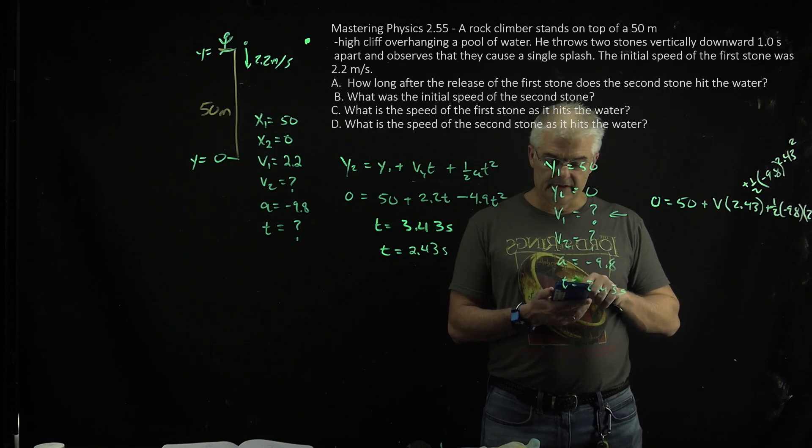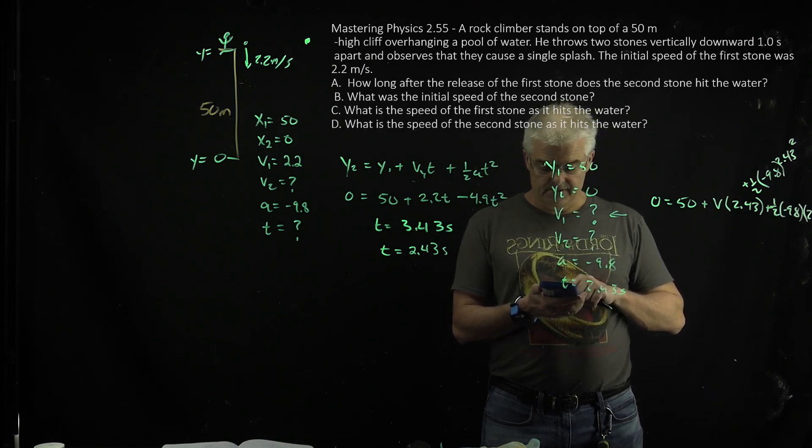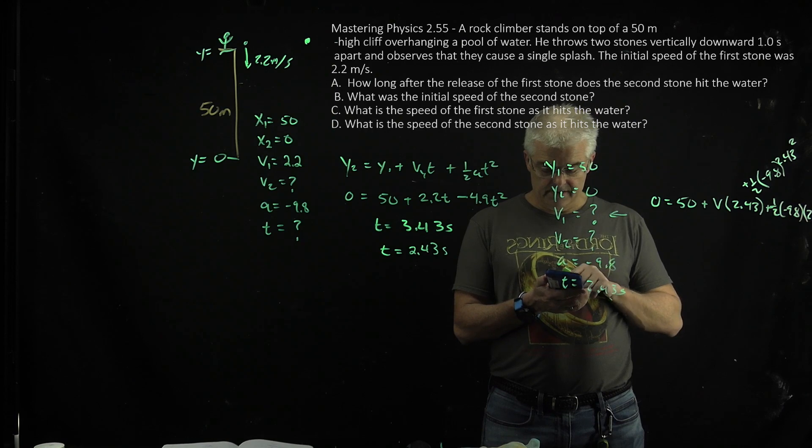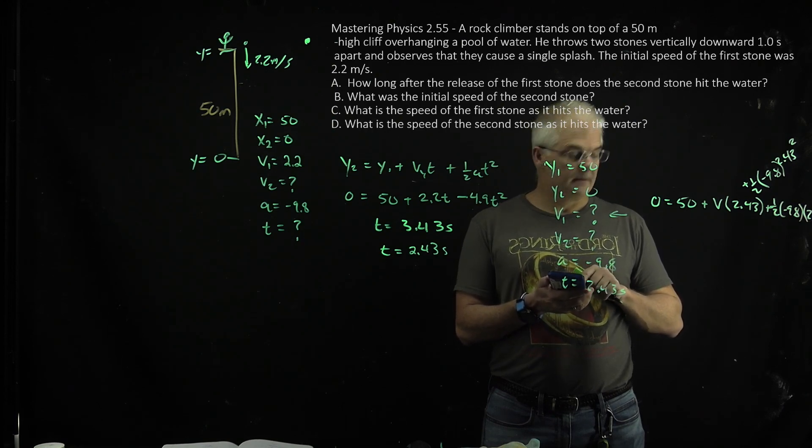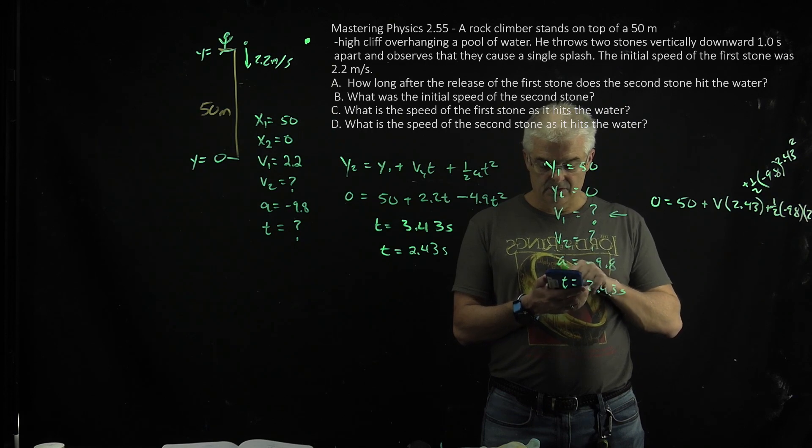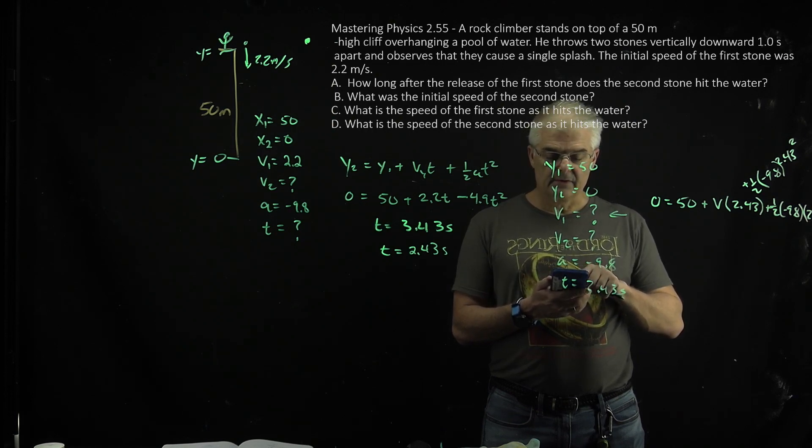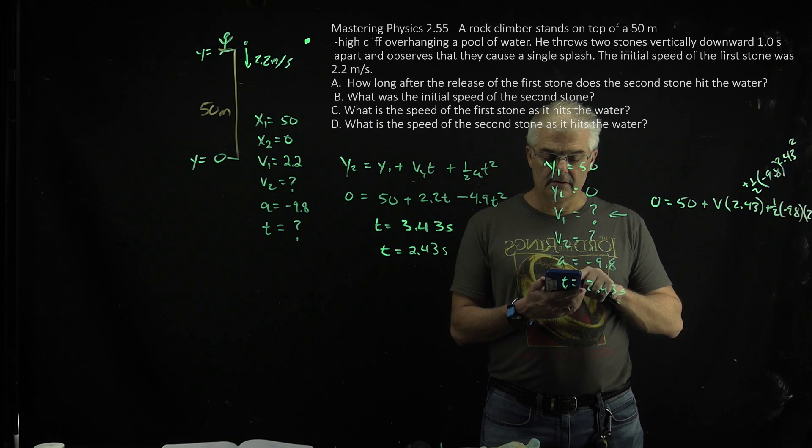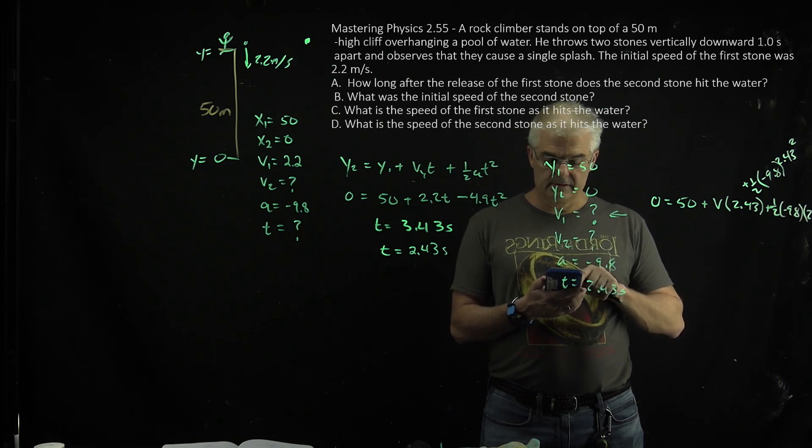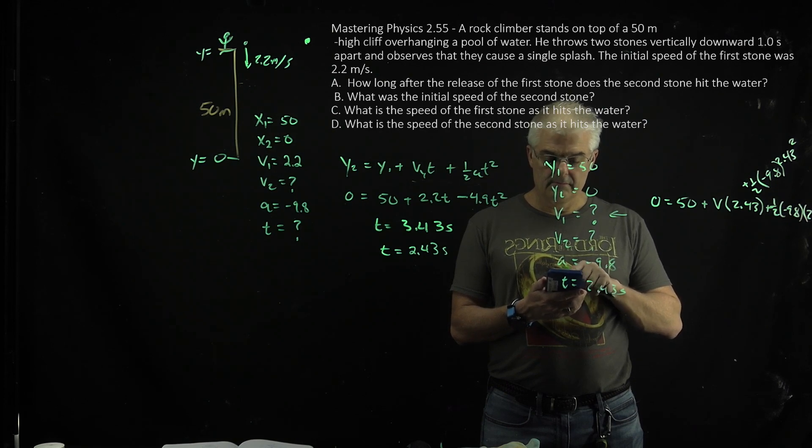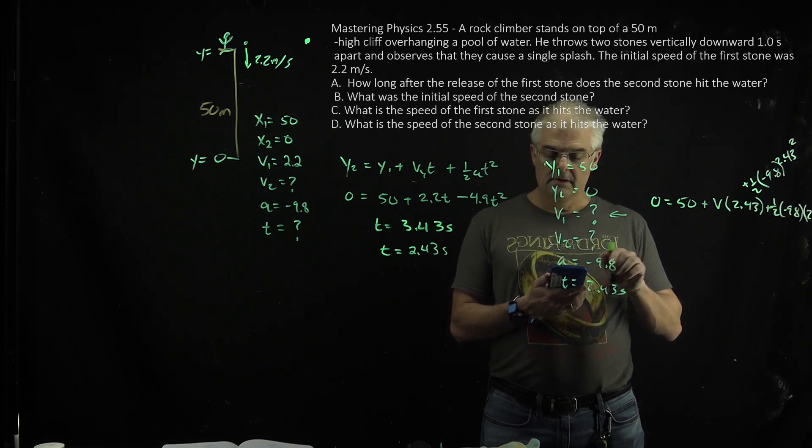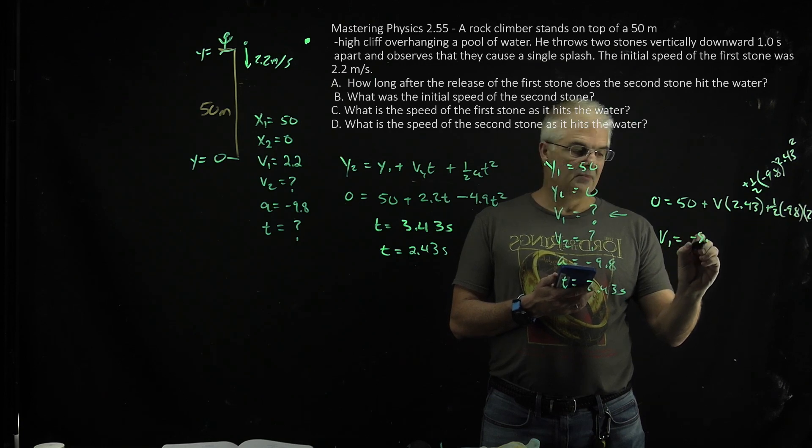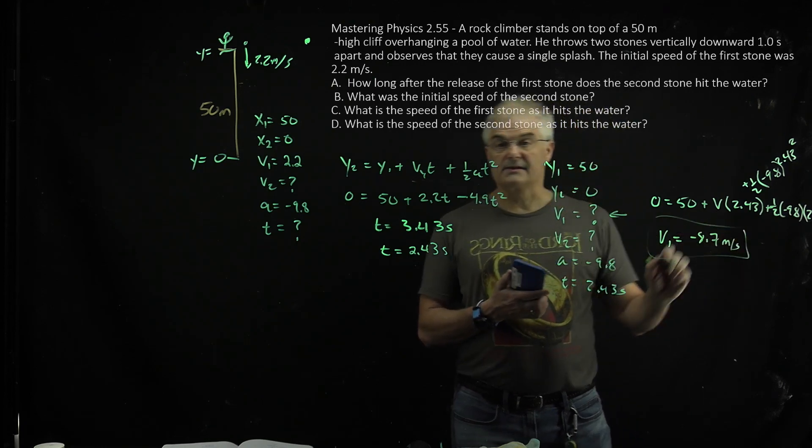So I'll say, go back to my cool solver thing, So, 50 plus 2.43x minus 4.9 times 2.43 squared. And I've got an extra squared on this, so we cut here. Sorry on this, ladies and gentlemen. And I get v1 equal to negative 8.7 meters per second. So that's the answer to b.